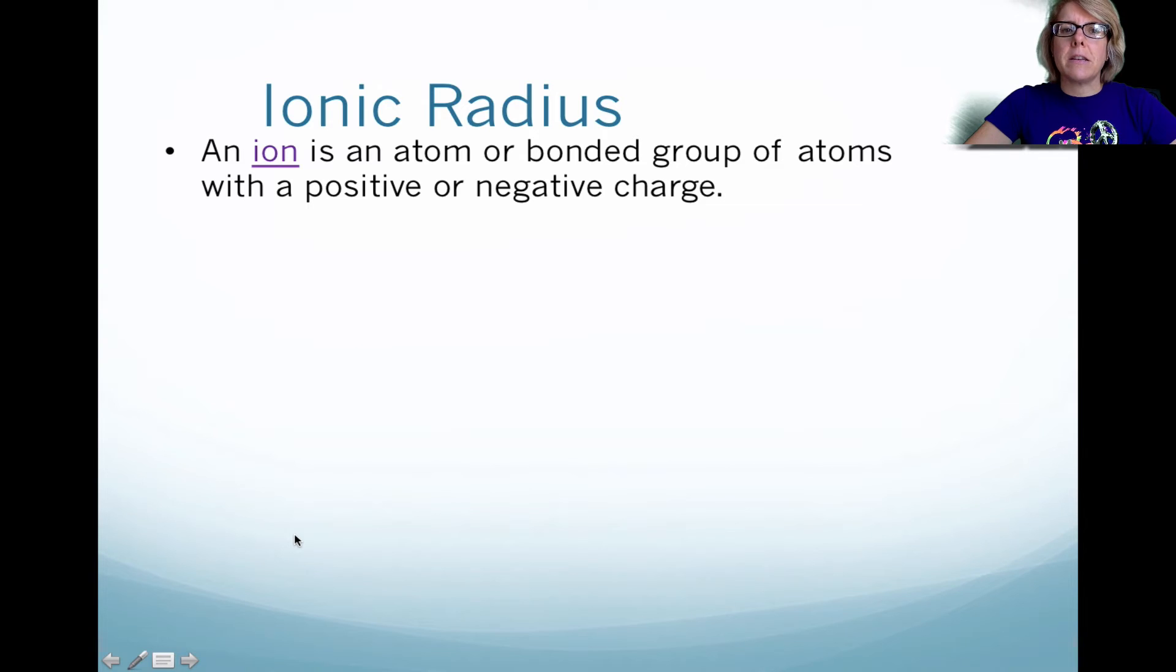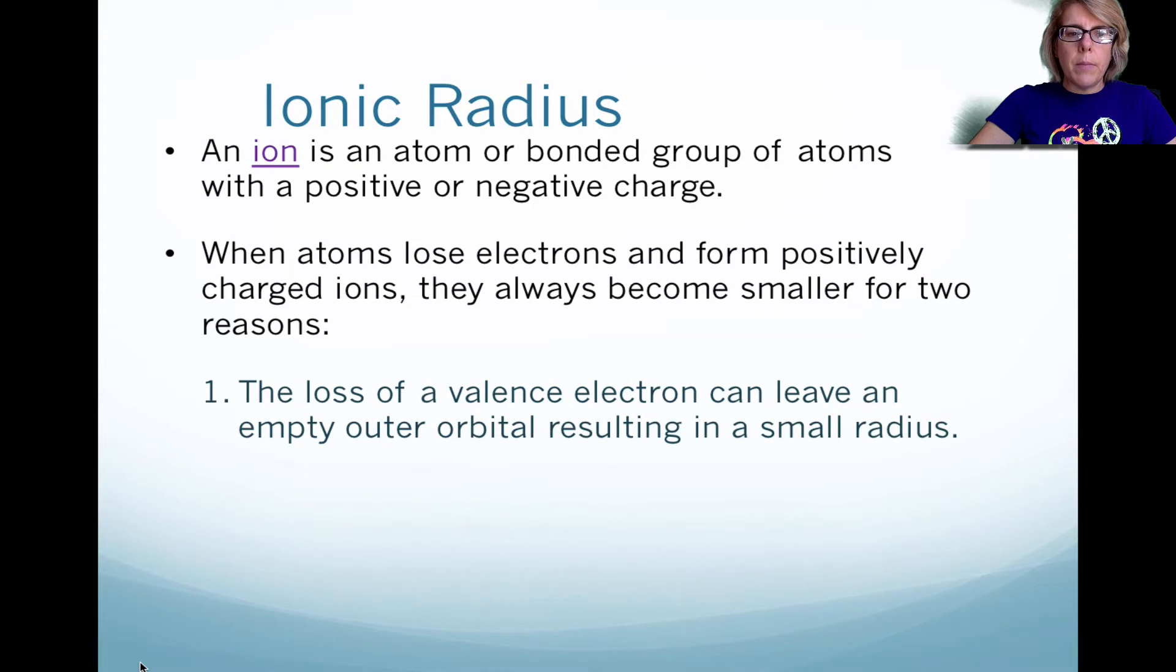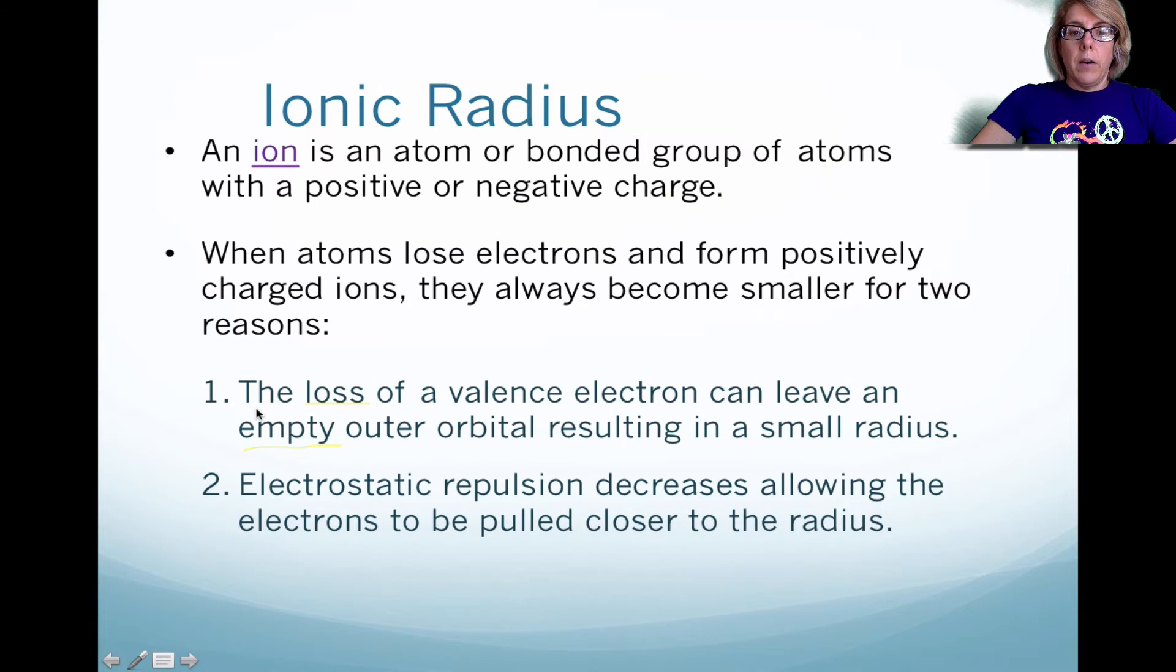Ion. What is an ion? An ion typically is an element that has either excess or it's lacking electrons. As a result, it's a positive overall or a negative overall. Please note when elements lose electrons, they tend to have a positive charge, and they become smaller as a result of it. Why does this happen? Because if you have a loss of electrons, you have an empty outer orbital, and as a result, it gets smaller. In addition to that, there's actually some repulsion between electrons because they're the same charge, and that repulsion actually gets smaller. So as a result, the electrons get closer to the nucleus.